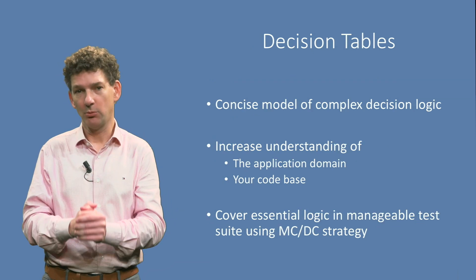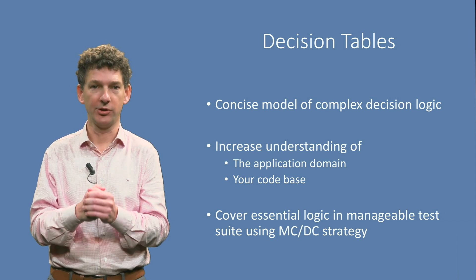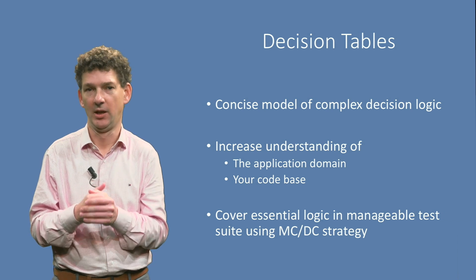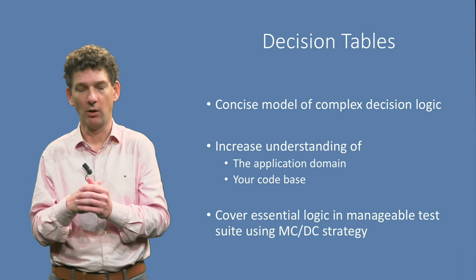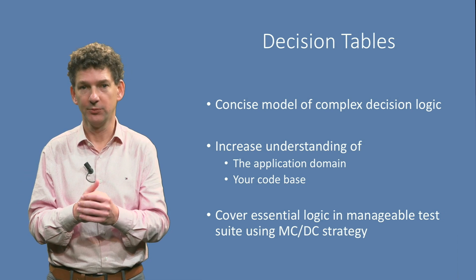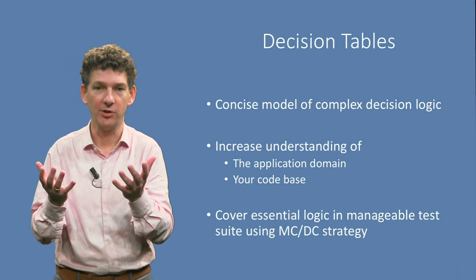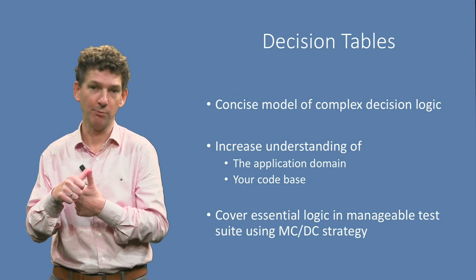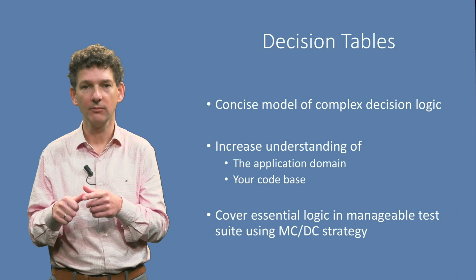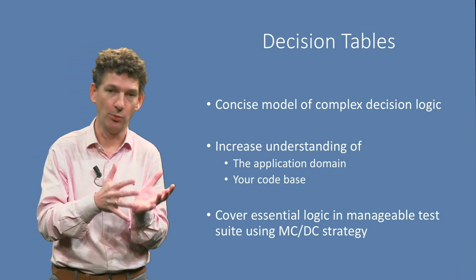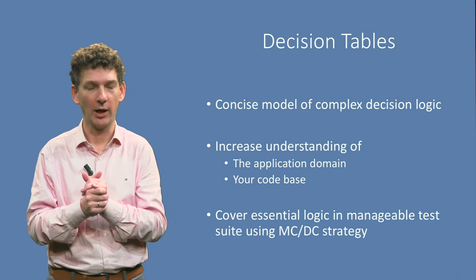To conclude, let me summarize the key points we covered on decision tables. Decision tables concisely model possibly complex decision logic into an easy-to-understand visual representation. You can use them to better understand the application domain, or to describe what is going on in your codebase. Once you have a decision table, you can use various test case derivation strategies. Of these, modified condition/decision coverage (MCDC) strikes a good balance between keeping the test suite manageable in size and exercising all the essential decision logic. In the exercises you can create your own decision tables — some small, some large — and experiment with implementing them in Java and JUnit, or your own favourite programming language. Enjoy!